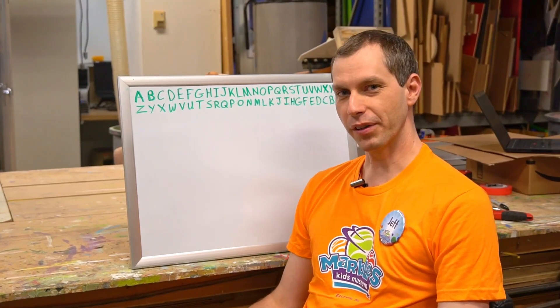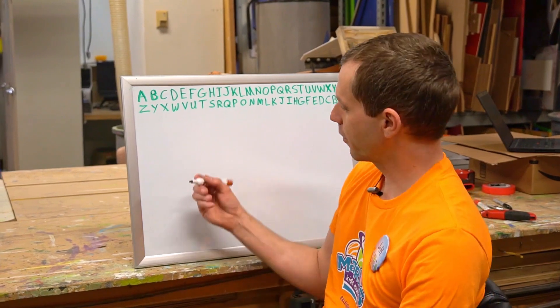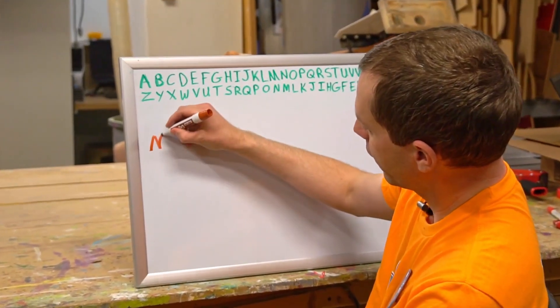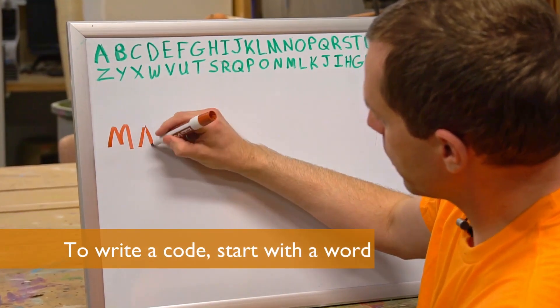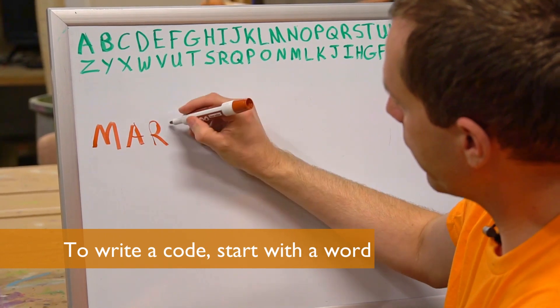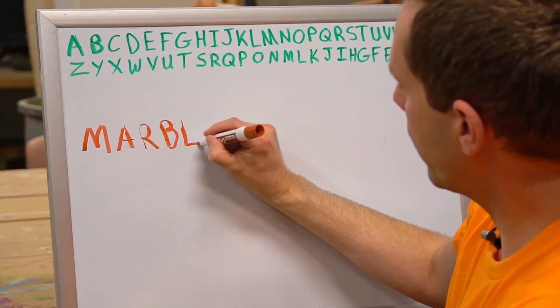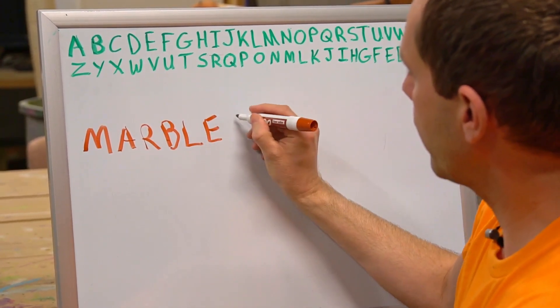Now I'm going to show you how to take a word and write it in the secret code. First, we'll write out the word that we want to translate. We'll do marbles. M, A, R, B, L, E, S.